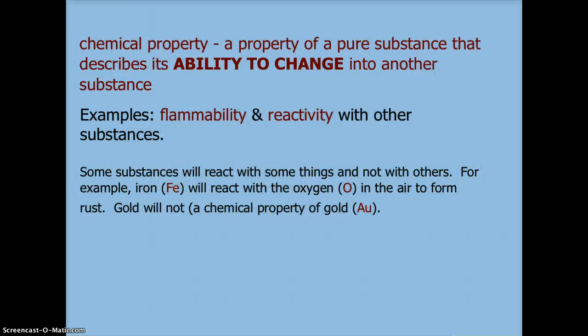Now, we talked about physical properties. We're going to look at chemical properties. And chemical properties are the properties of a pure substance that describes its ability to change into another substance. So it hasn't changed already. We just know that it has the potential to do so. So some examples would be flammability, conductivity, which is the ability to burn, and reactivity with other substances. So some substances will react with some things and not with others.